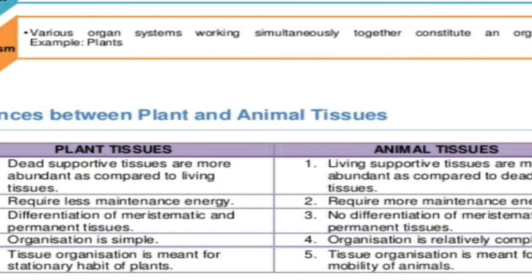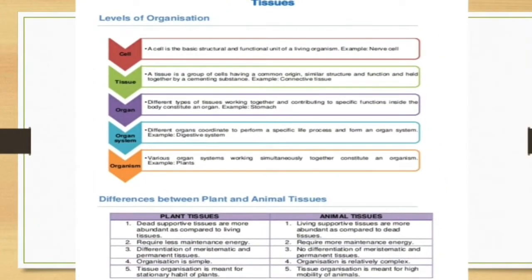Plant tissues have an abundant amount of dead supportive tissues because of their fixed habit — they don't have to move, so not many life processes are needed. That is why the energy requirement is low, whereas the energy requirement of animal tissues is quite high. The differentiation in plant tissues is into meristematic tissue and permanent tissue, whereas no such tissues exist in animals. The organization of plant tissues is simpler, suited to a stationary habit of life, whereas animal tissues promote mobility.